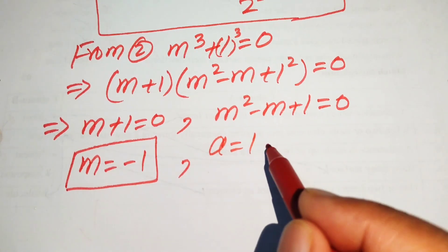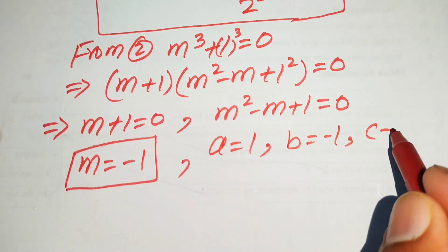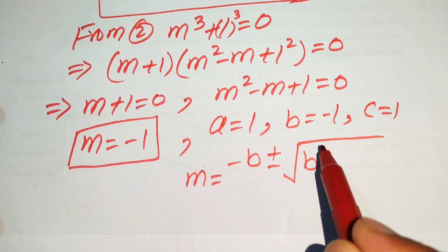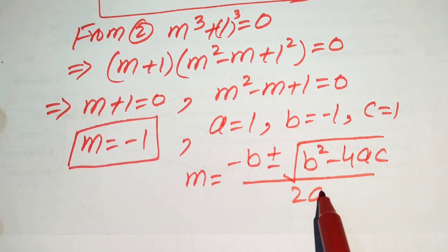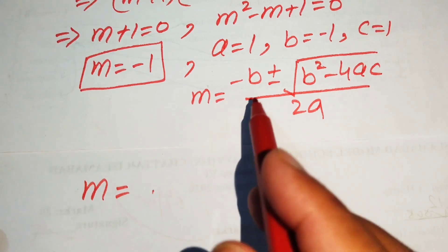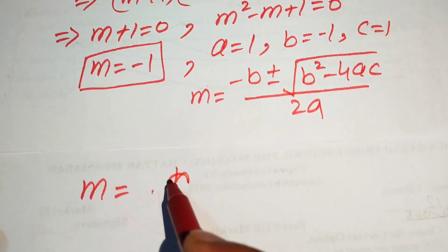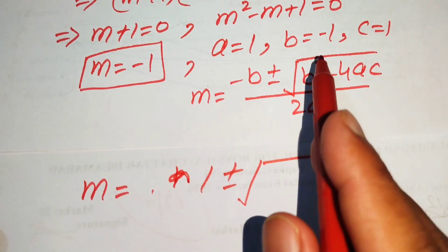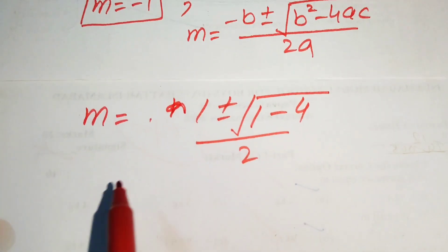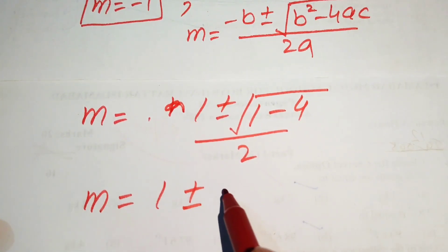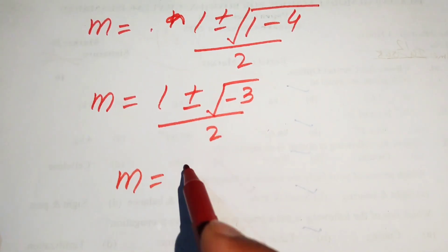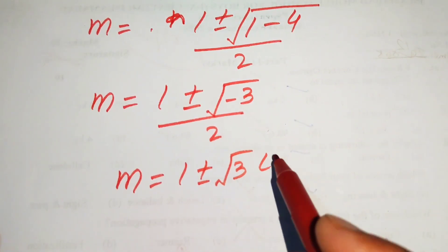The second case gives the quadratic m squared minus m plus 1 equals to 0, with coefficients a equals 1, b equals minus 1, and c equals 1. Applying the quadratic formula: m equals (1 plus or minus square root of (1 minus 4)) over 2, which simplifies to m equals (1 plus or minus square root of minus 3) over 2, giving the two complex solutions m equals (1 plus or minus root 3 · i) divided by 2.